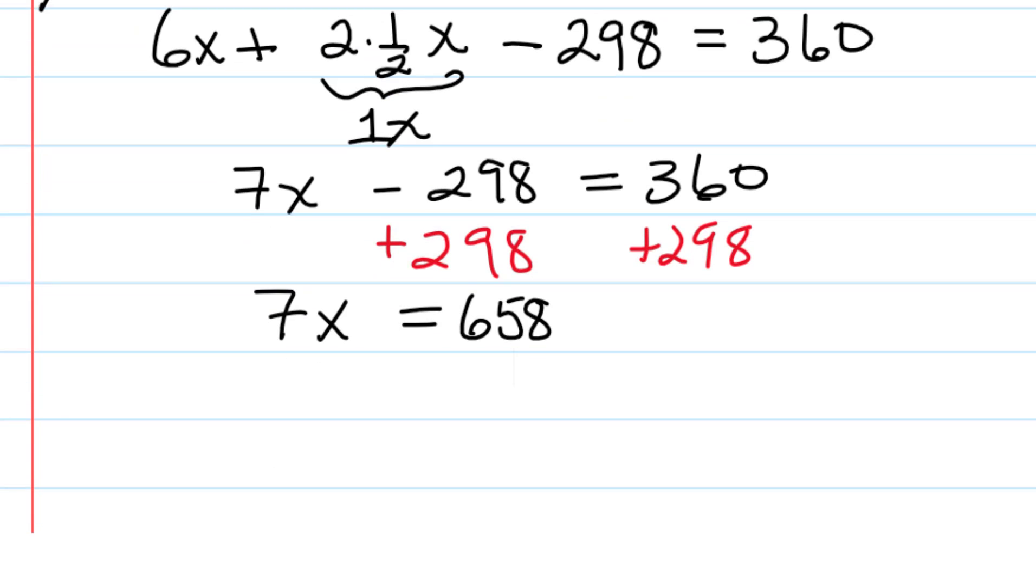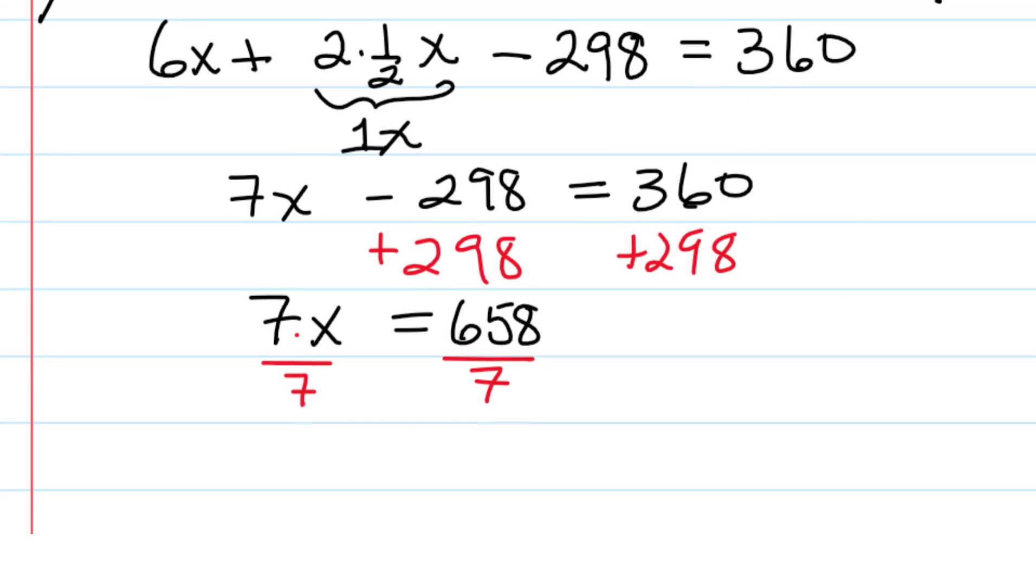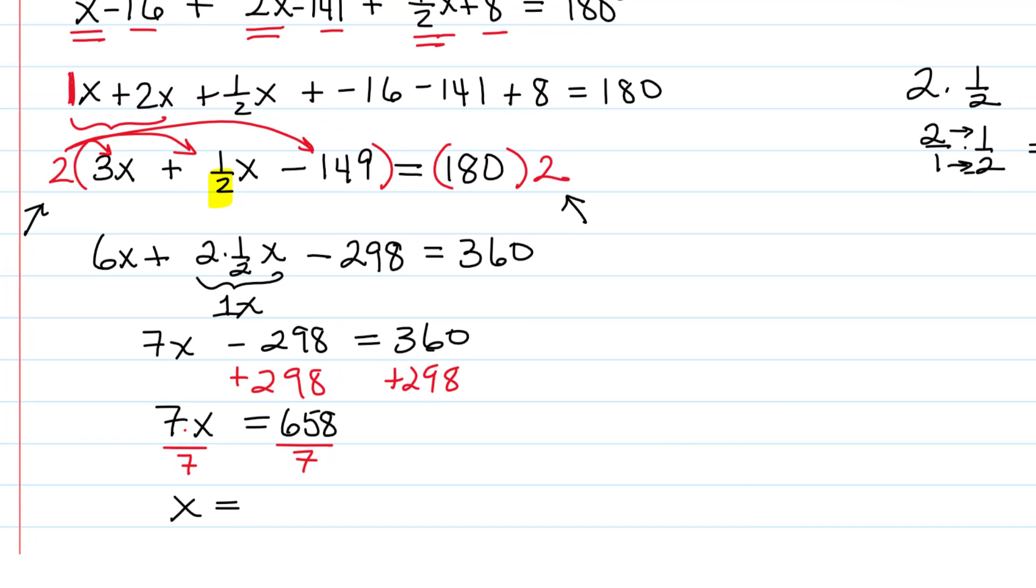And then since 7 is being multiplied by the x, we're going to have to reverse that by dividing by 7, and we have to keep the balance. So we do that on both sides of the equal sign. So we're going to have x equals, and then 7 goes into 658, 94 times. So x is equal to 94.